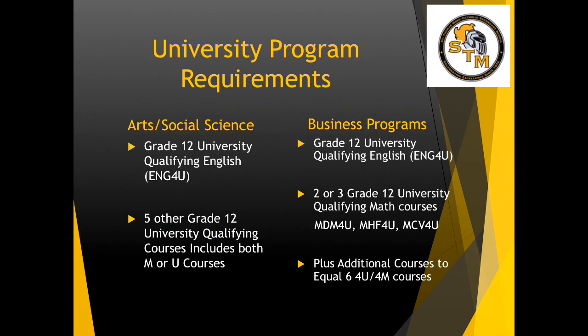What are some university requirements for programs? Those of you who are interested in an arts, social science, or humanities program will require Grade 12 university qualifying English — English 4U — and 5 other Grade 12 university qualifying courses, which include both mixed level or university level courses. Please remember that for all university programs, it is 6 4U/4M courses that are required in order for you to be eligible to apply.